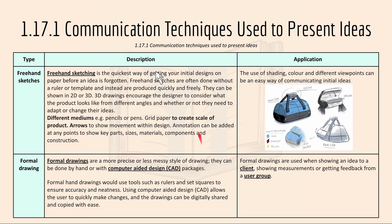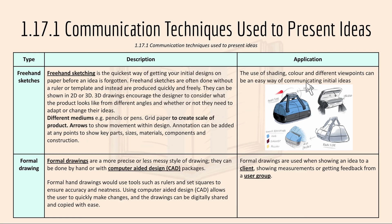Moving on to 1.17.1 — communication techniques used to present ideas. First, freehand sketches. It's the quickest way of getting your initial designs on paper before an idea is forgotten. It could be in 2D or 3D, and 3D drawings encourage designers to consider what the product looks like from different angles. Different mediums like pencil or pen, grid paper to create scale of products, arrows to show movement within the design, and annotation can be added at any point to show key parts, sizes, materials, components and construction.